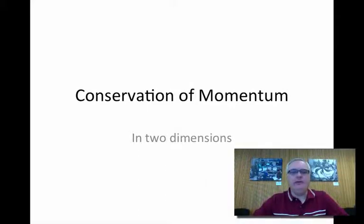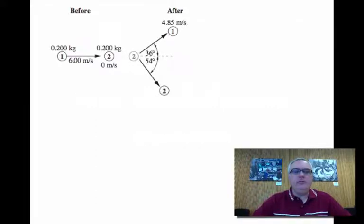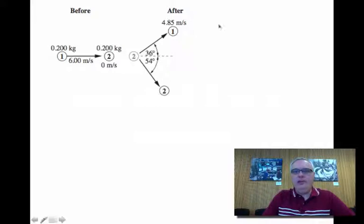Okay, conservation of momentum, this time in two dimensions. That means we have to keep track of the vectors. So we're still looking at the law of conservation of momentum. Initial momentum has to be equal to the final momentum, or before and after.